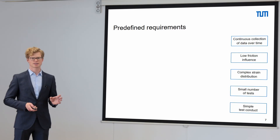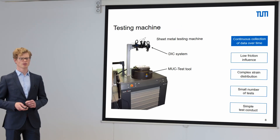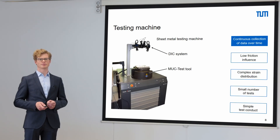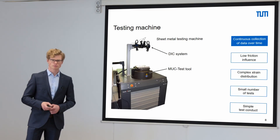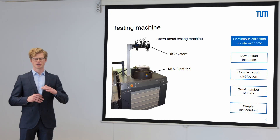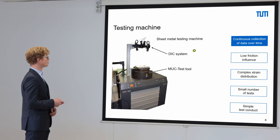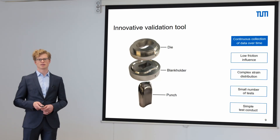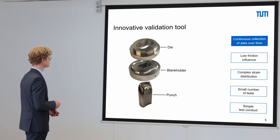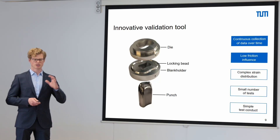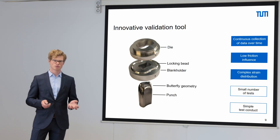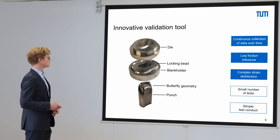Now let me introduce the MOOC test in comparison to these five predefined requirements. As a testing machine, we use the sheet metal testing machine BUP 1000 from Zwick-Röll. We use a DIC system, ARAMIS from GOM, where a quasi-continuous collection of data over time in the form of coordinates and strain on the sheet surface is possible, so we have the first predefined requirement fulfilled. The tool of the MOOC test consists of die, blank holder and punch. In order to reduce the friction, we use a locking bead so the draw-in of the specimen is limited and the experiment is not dominated by friction. The shape of the tool resembles a butterfly which produces complex strain distributions, and so we have the next two predefined requirements fulfilled.